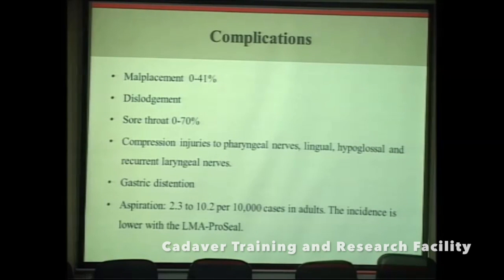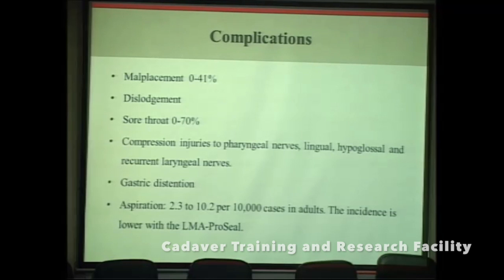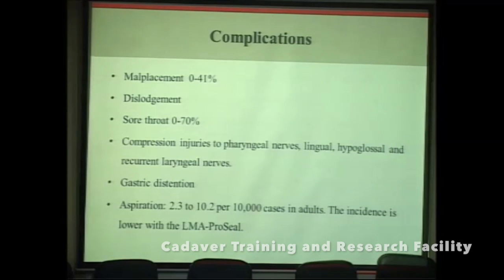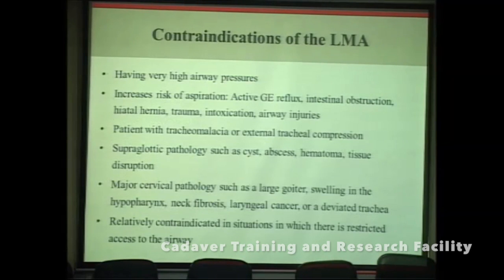Complications of supraglottic airway devices include malplacement in approximately 0–41% of cases and dislodgement with head and neck movements, with incidence varying from 0–70% and highest with the FastTrack. Compression injuries to pharyngeal nerves — lingual, hypoglossal, and recurrent laryngeal nerve — have also been reported. Gastric distension may occur with first generation LMAs, and the risk of aspiration is around 2.3 to 10.2 per 10,000 cases in adults, with the lowest incidence with the LMA ProSeal.